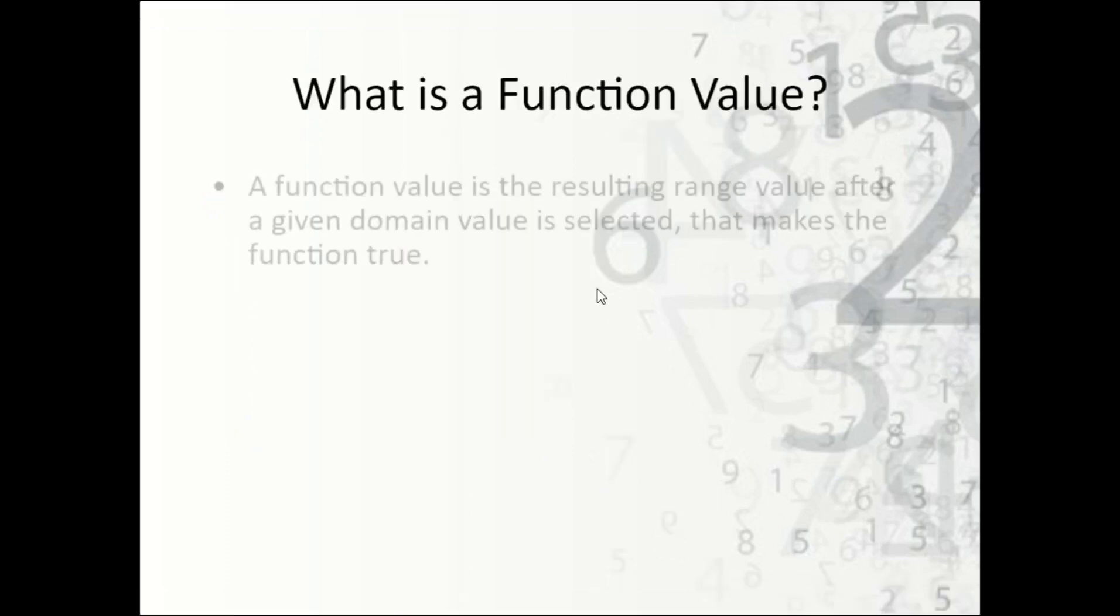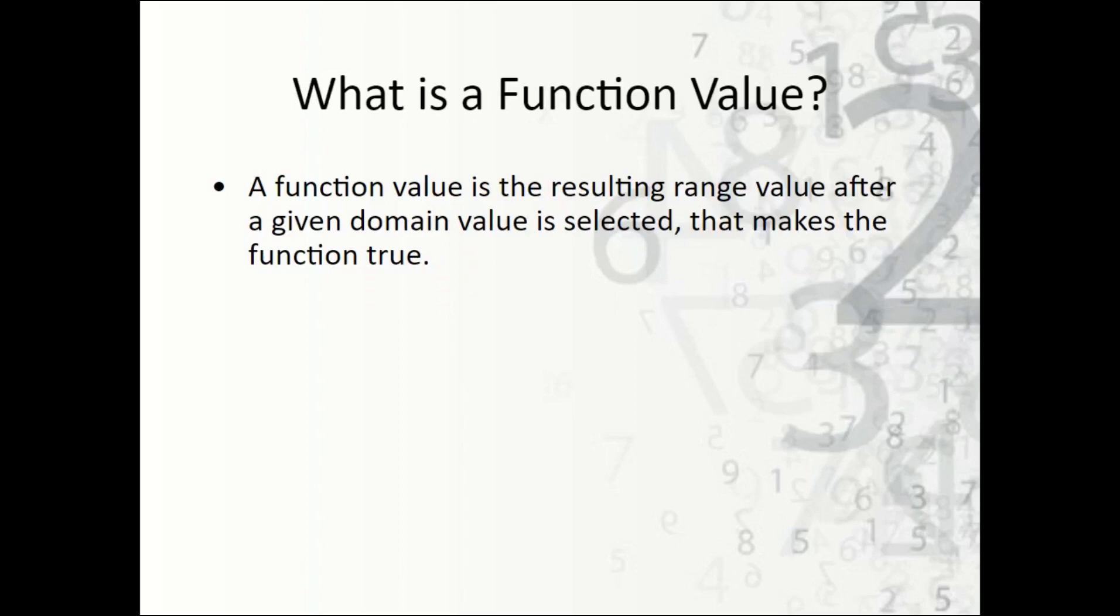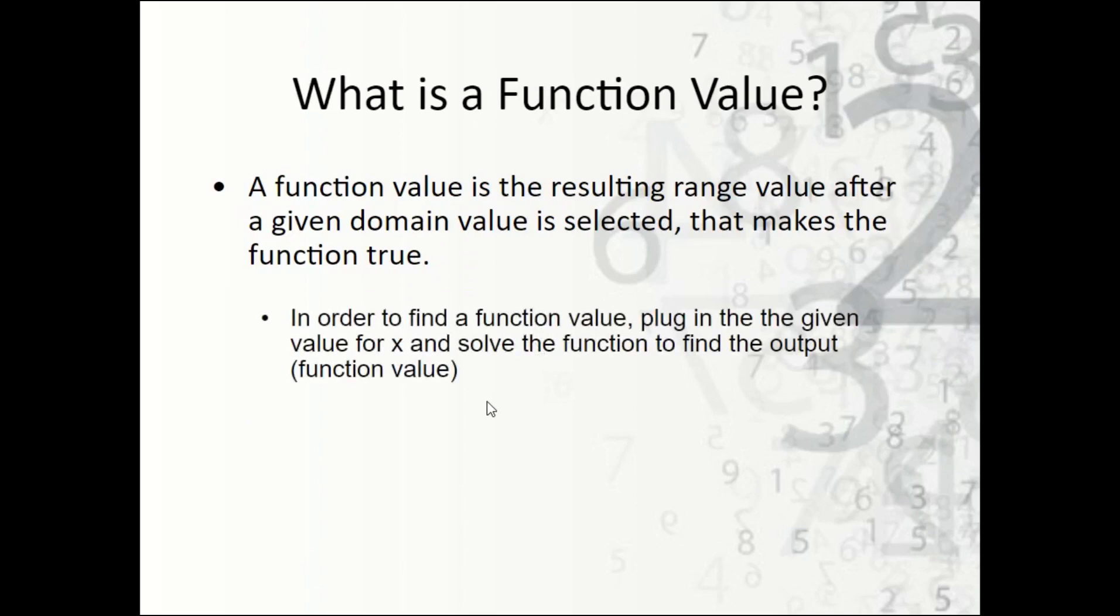Now, what is a function value? A function value is the resulting range value - the y value - after a given domain value is selected that makes the function true. So in order to find a function value, we're going to plug in the given value for x. The function value is the result or the output. So for instance, if I have f(3) = x - 5, I'm going to take 3 and plug it in. We plug 3 in for x and get 3 minus 5, which is negative 2. So negative 2 is my function value.